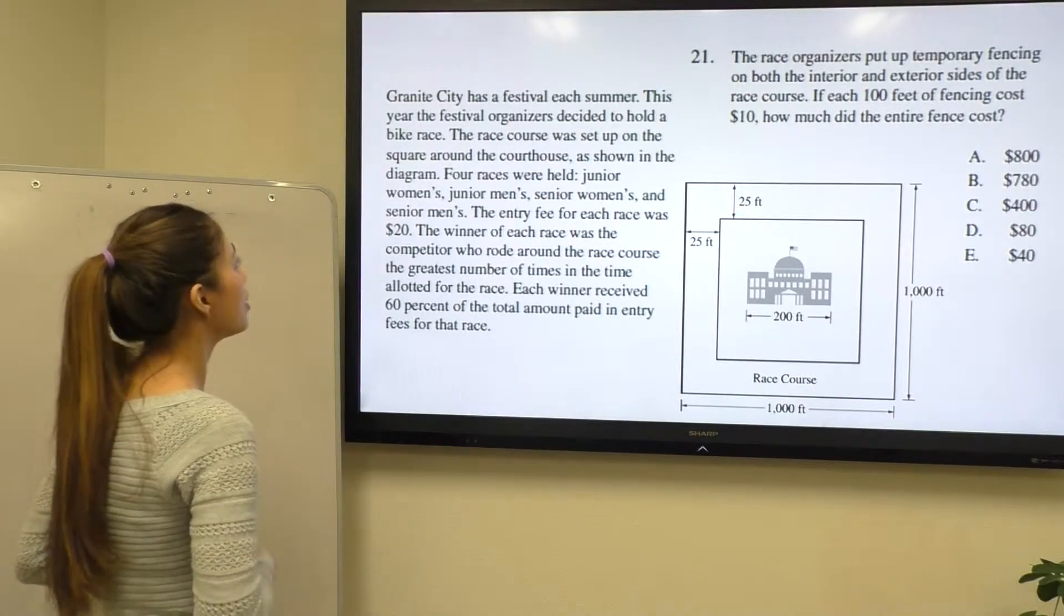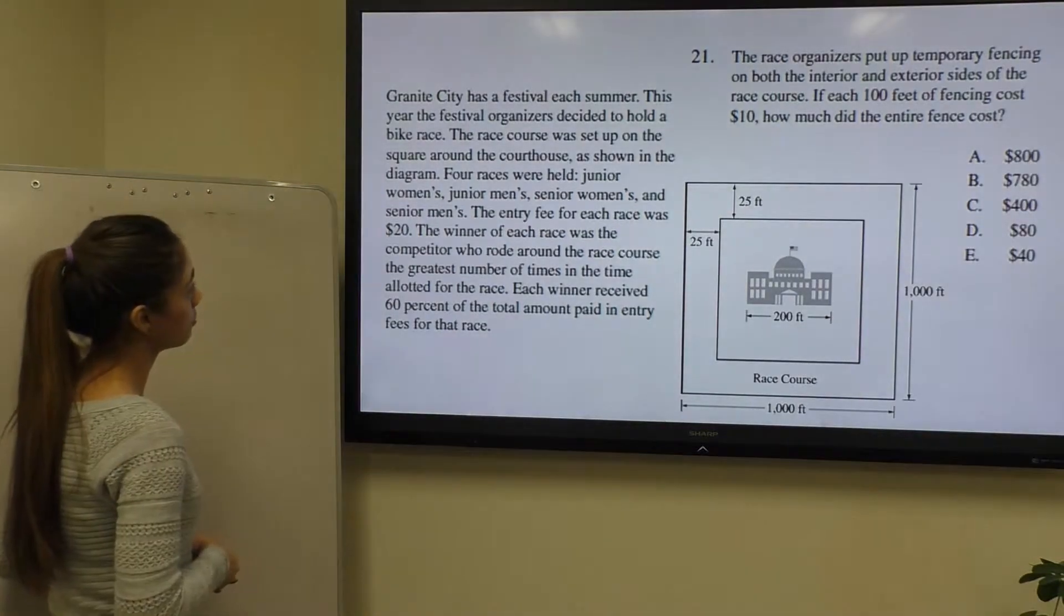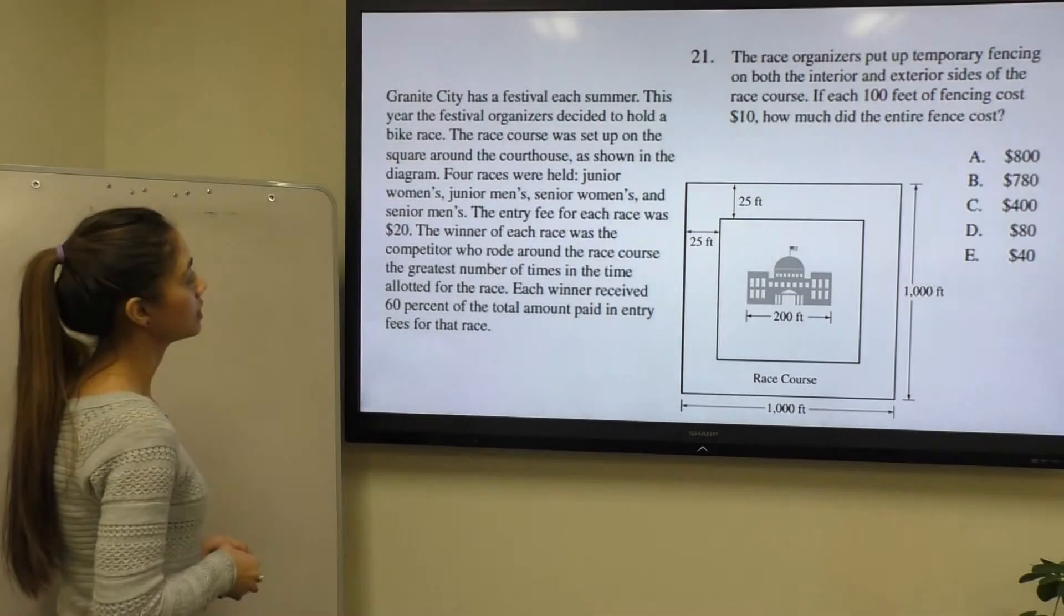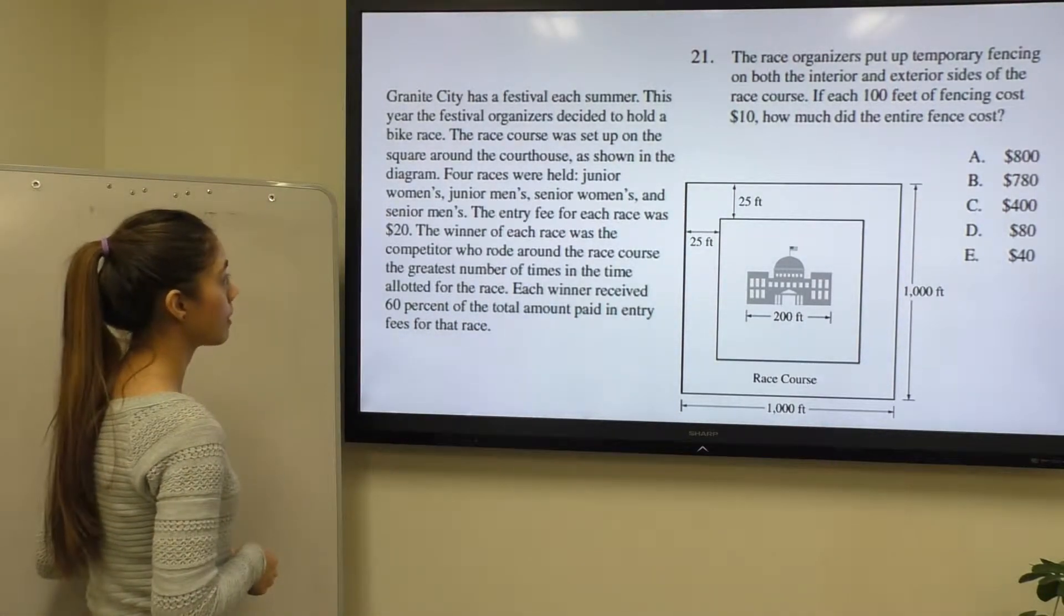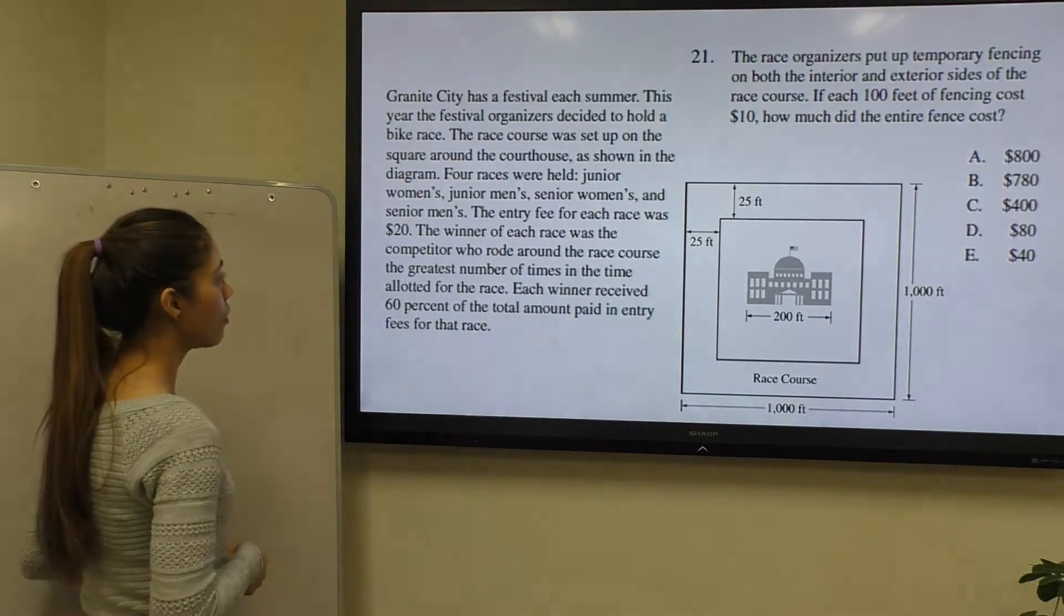Question number 21 says Granite City has a festival each summer. This year the festival organizers decided to hold a bike race. The race course was set up on the square around the courthouse as shown in the diagram.